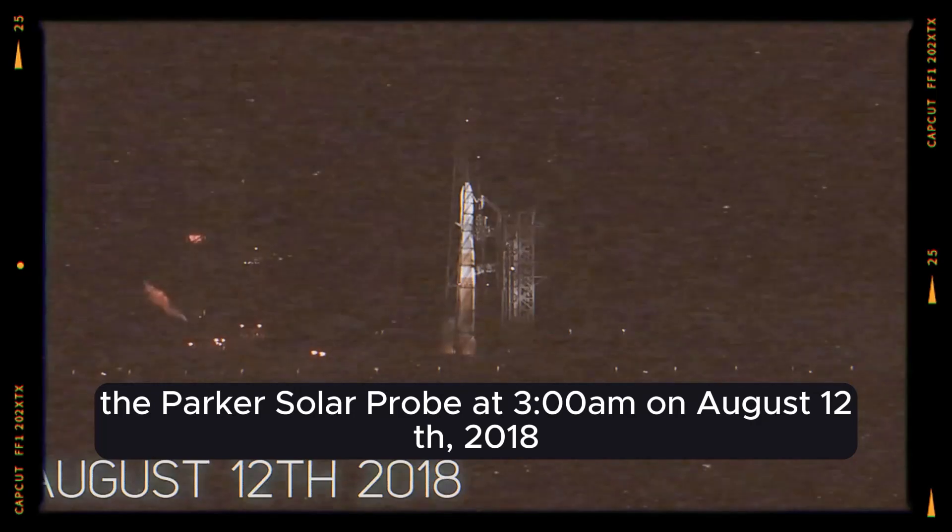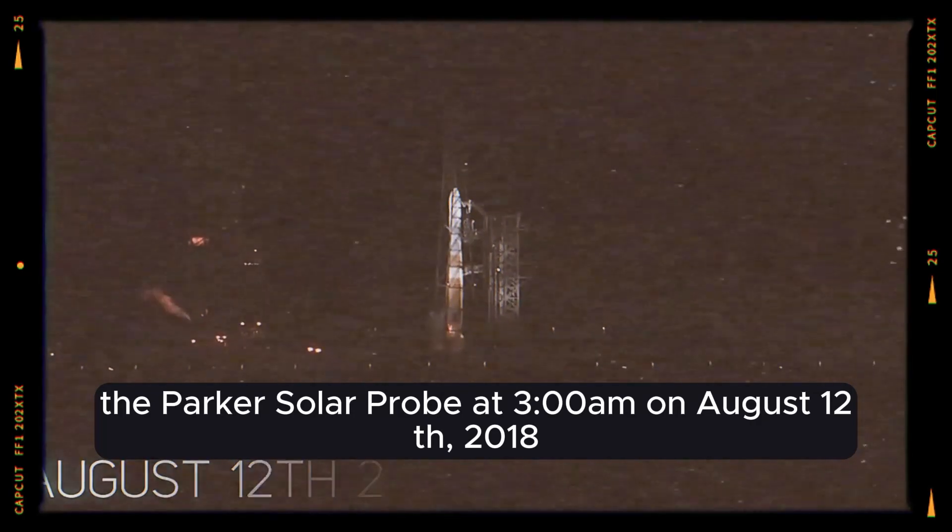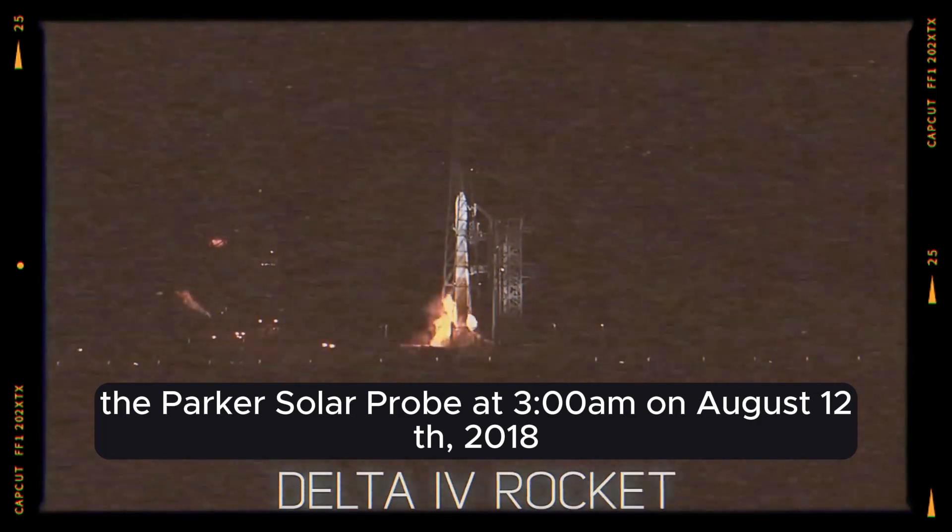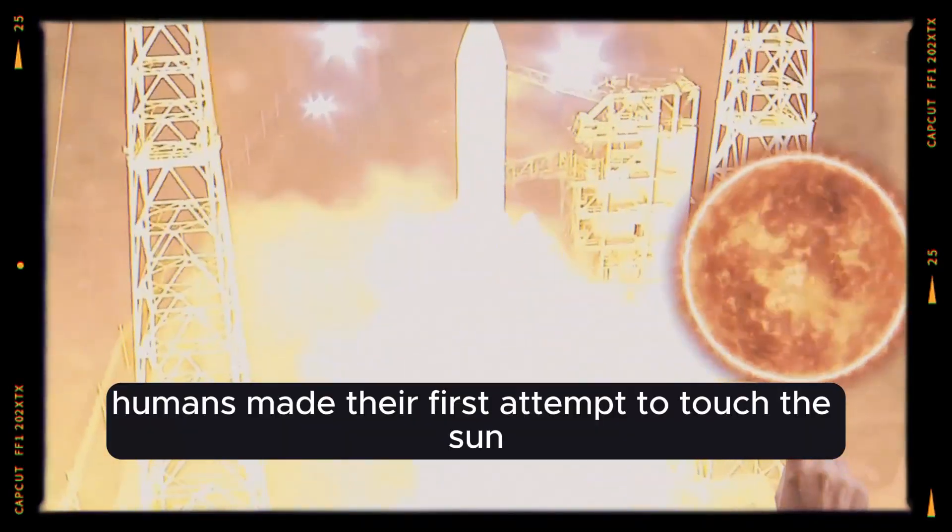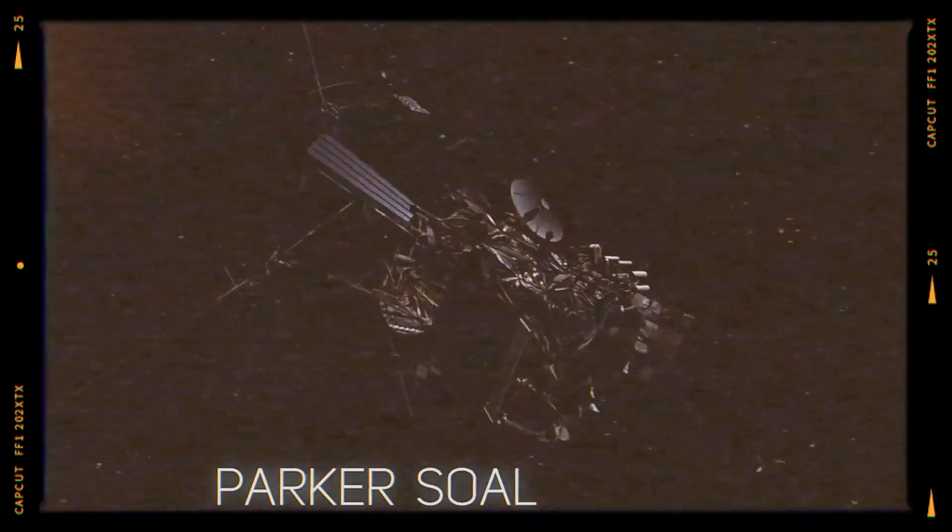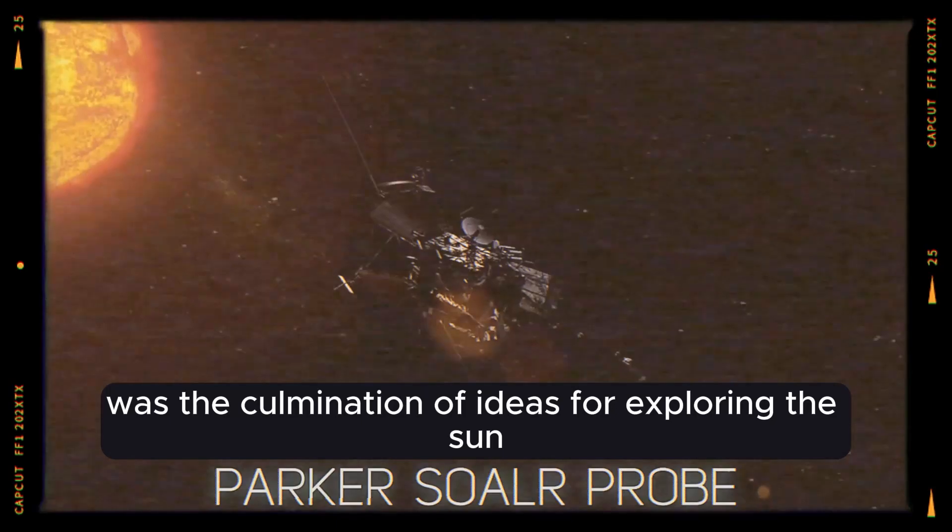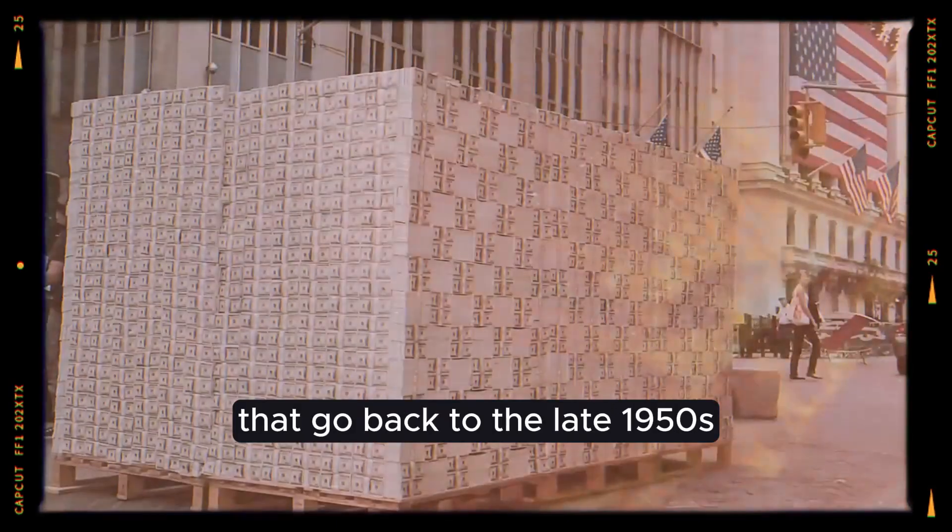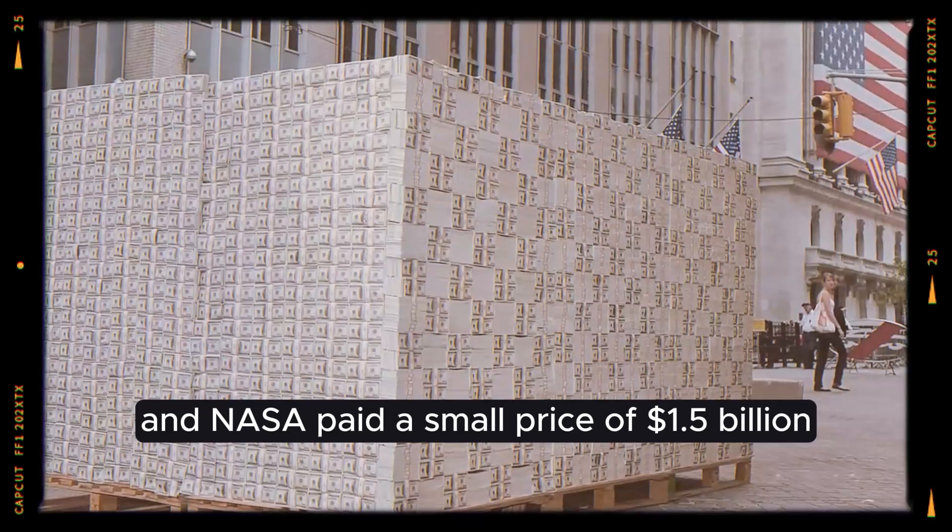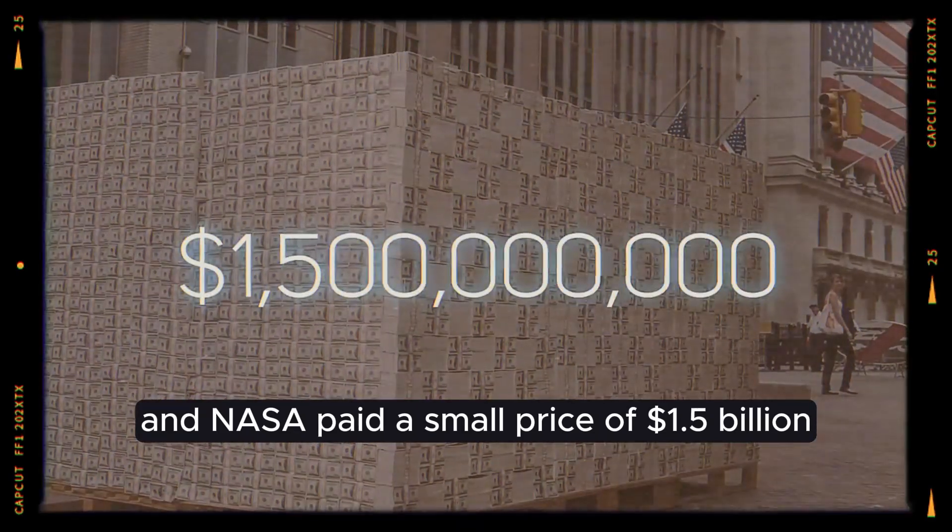The Parker Solar Probe. At 3:31 a.m. on August 12, 2018, aboard a Delta IV heavy rocket at Cape Canaveral, humans made their first attempt to touch the sun. The Parker Solar Probe was the culmination of ideas for exploring the sun that go back to the late 1950s, and NASA paid a price of $1.5 billion to make it happen.